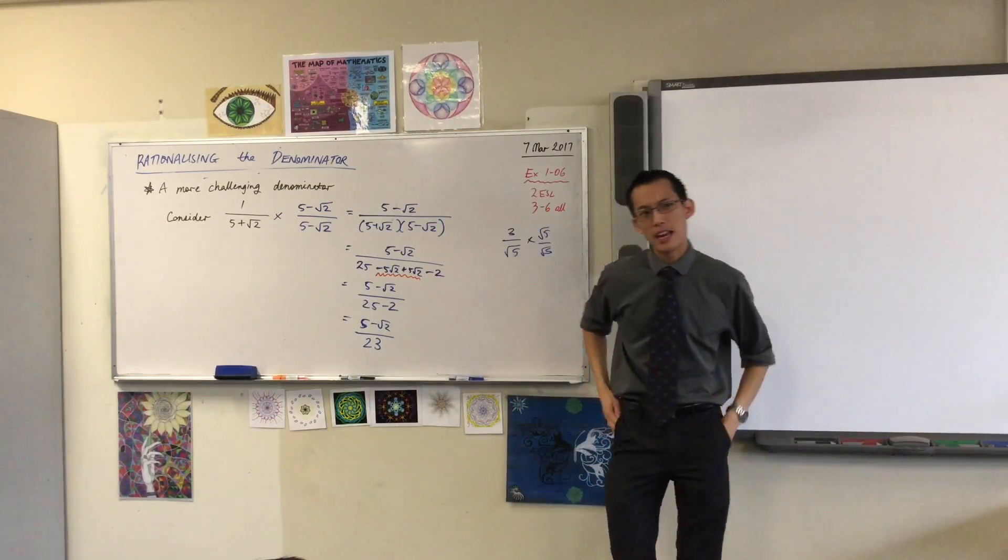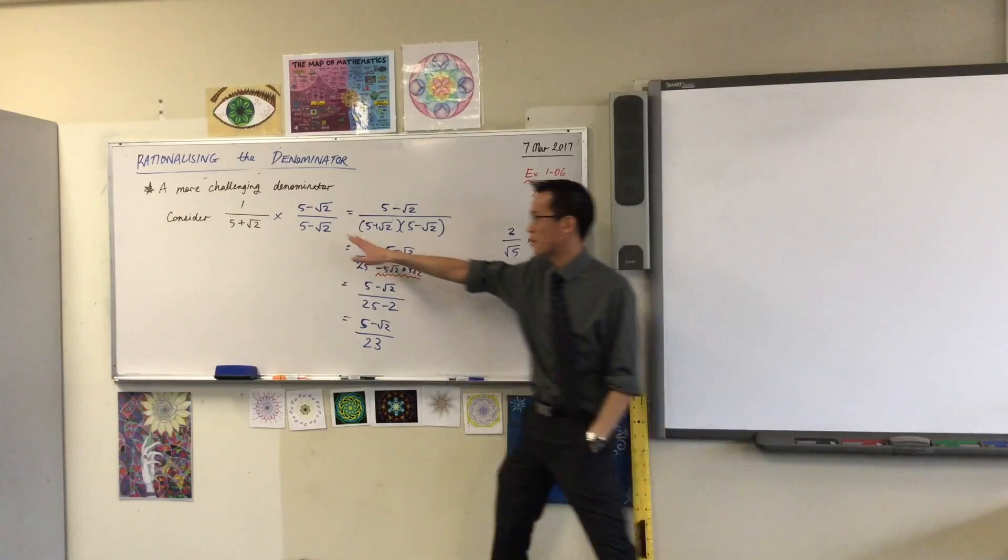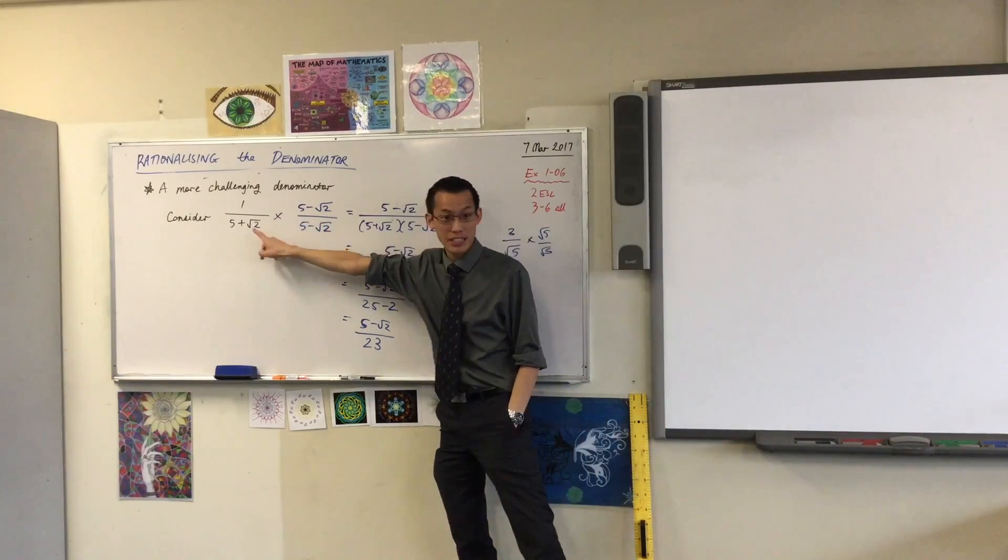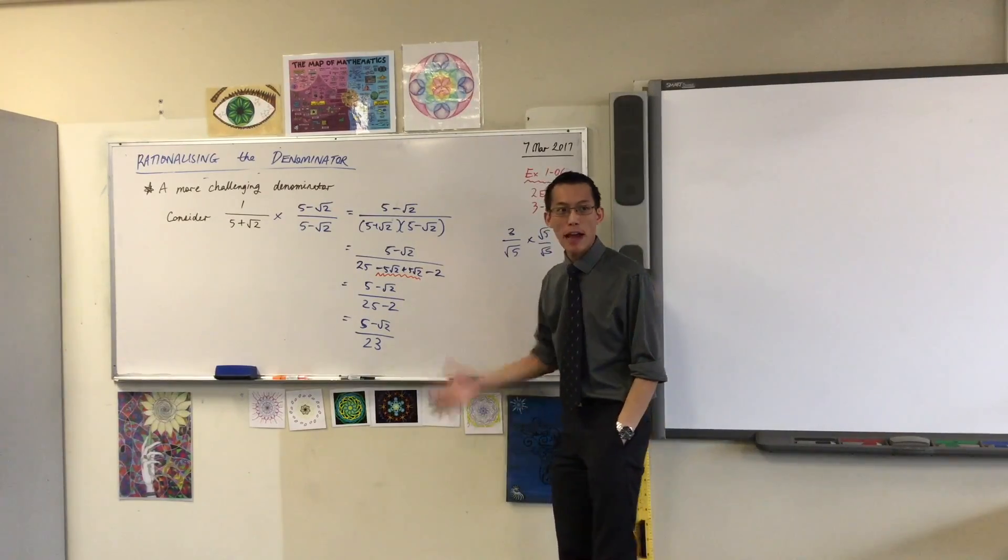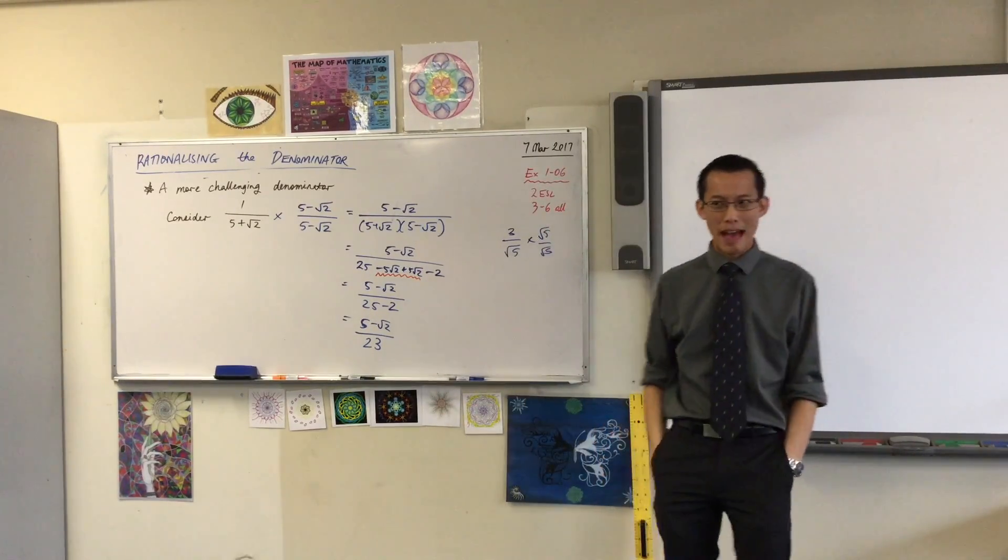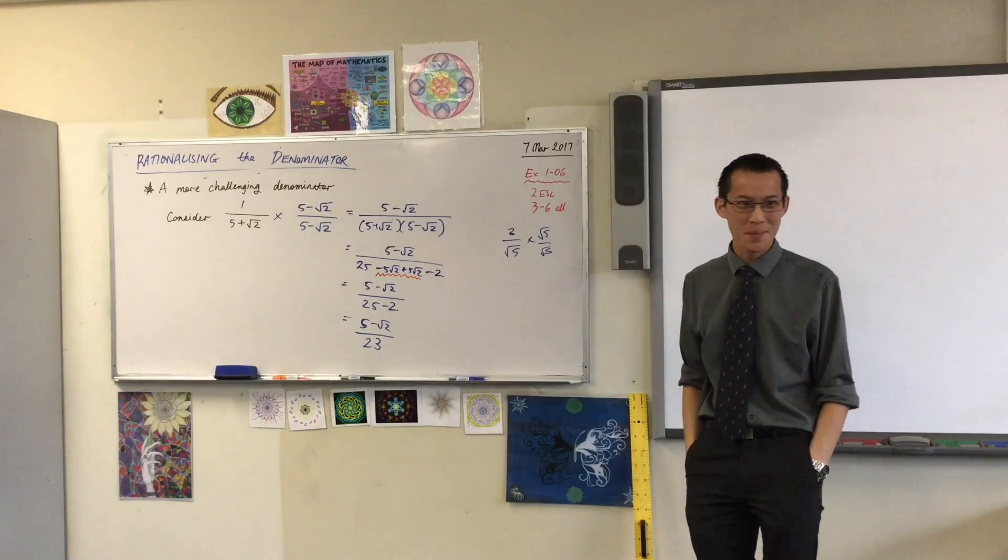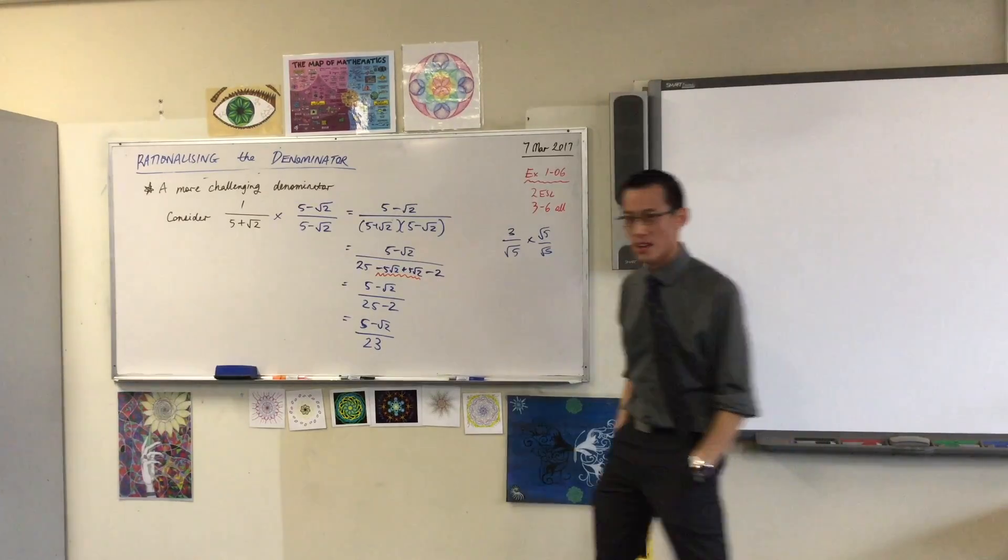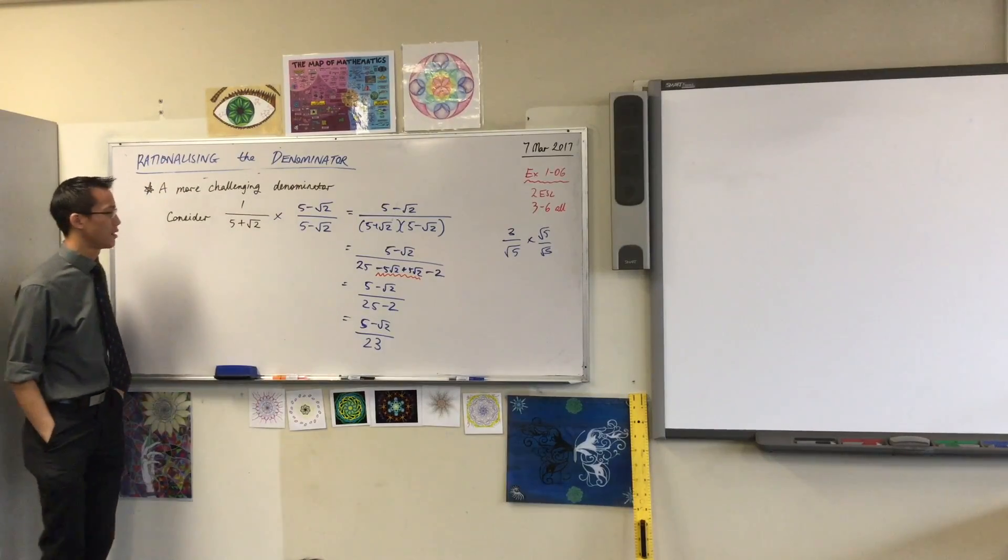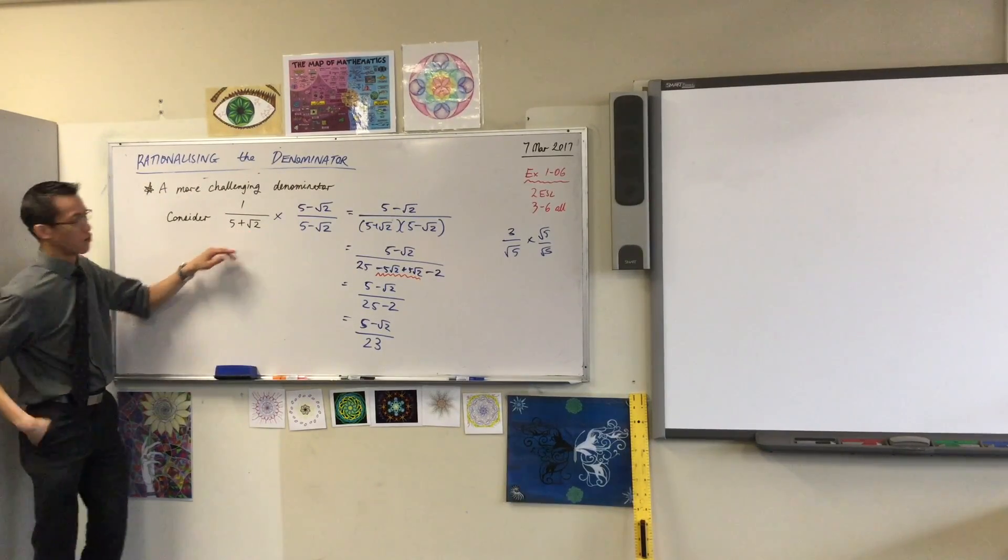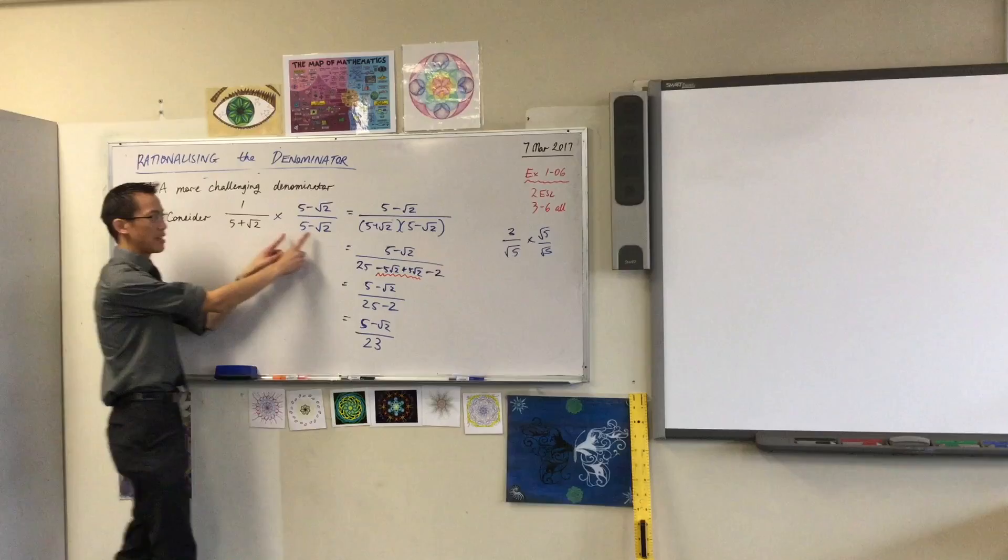We start off with something that looks very strange. Like how are we going to deal with this? But if you multiply by the right number, then it does indeed rationalize. Now the real question is, how did I know what number to multiply by? Can you see how I chose it not randomly? I chose it very specifically. Look at this number down the bottom. Or rather this pair of numbers. Now look at these guys.